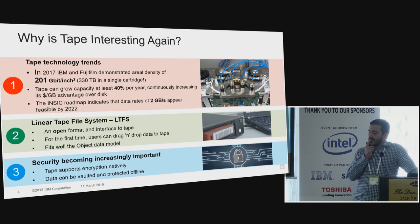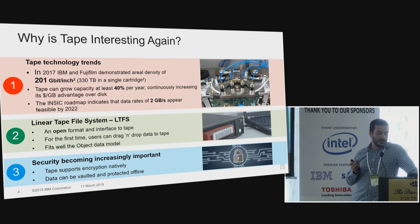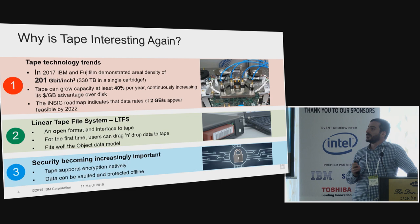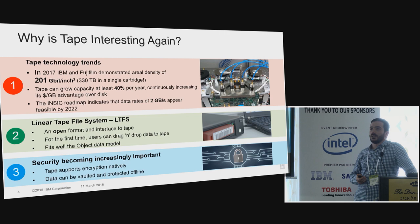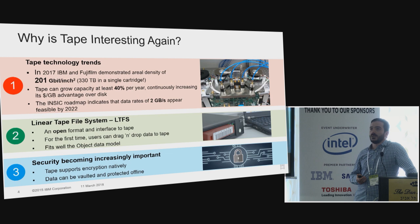Tape is becoming interesting again for three main reasons. The first is that it can continue scaling capacity density - how many bits you can record per square inch of tape - at a very good rate, sustaining the roadmap we've achieved over the last few years well into the future. Last year we demonstrated 200 gigabits per square inch, which would correspond to a cartridge with a capacity of 330 terabytes. Tape can grow its capacity at about 40 percent year over year.